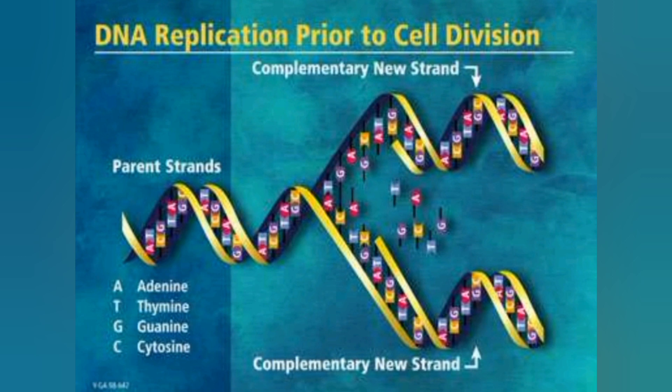The new strands are separated from the old strand, and these are the bases joined together — guanine and cytosine. These strands are called complementary new strands. This process is called DNA replication, in which a copy of DNA is produced, and this process occurs during cell division.